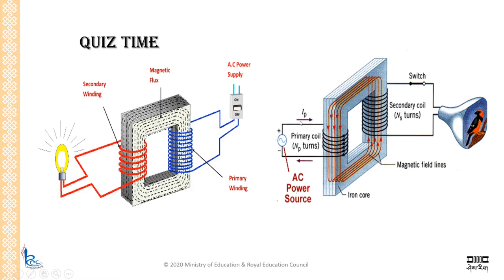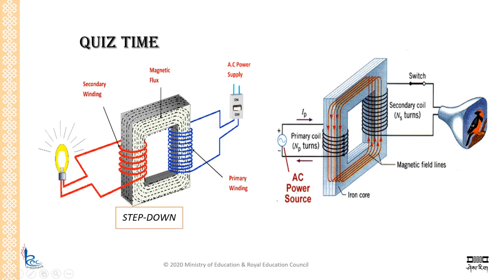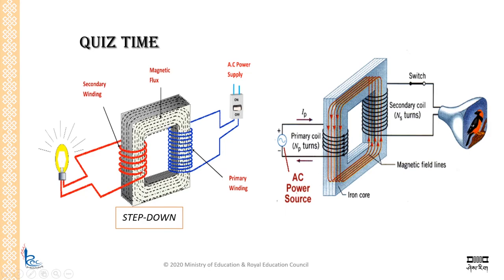Study that picture carefully and tell me which one is step-up and which one is step-down. The first one is step-down — you can see the number of turns in the primary is more and in the secondary is less, which happens in step-down. Here the number of turns in the primary is less and in the secondary is more — that happens in a step-up transformer.